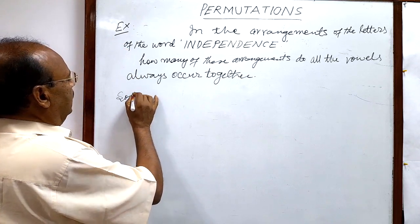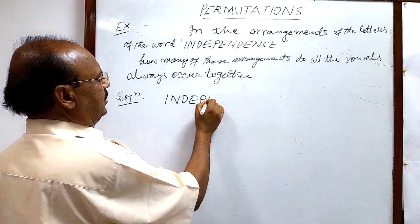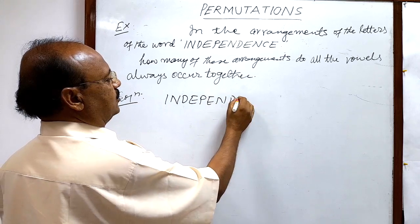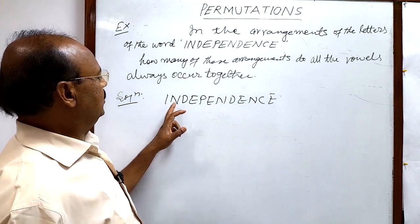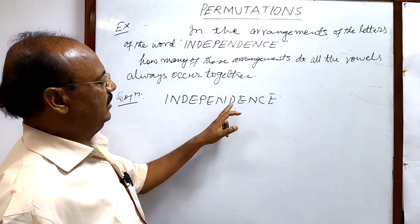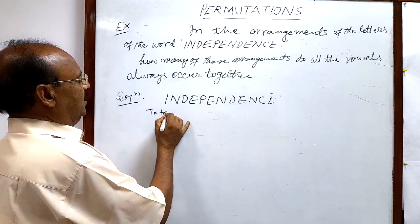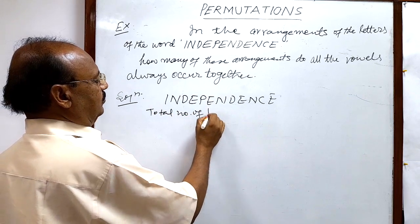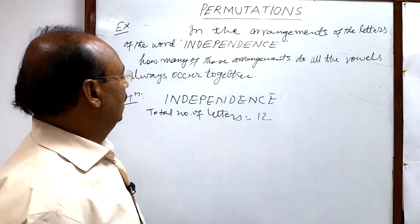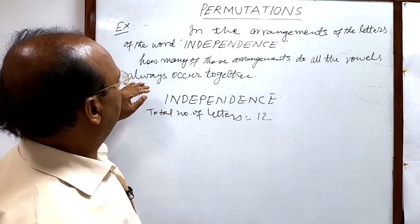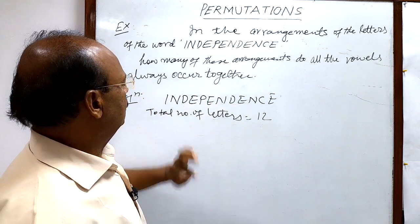So the given word is INDEPENDENCE. The total number of letters is 12. The condition is that all the vowels always occur together.